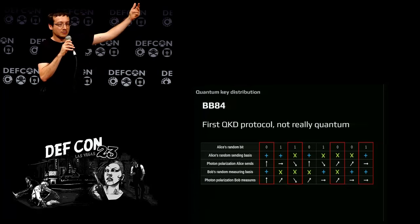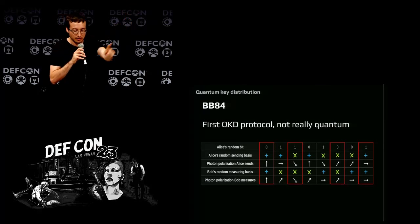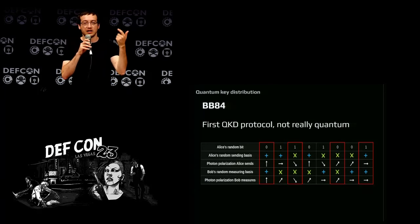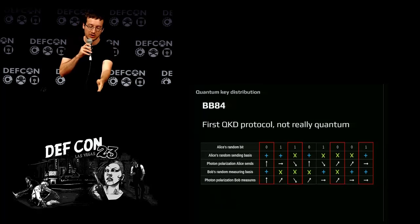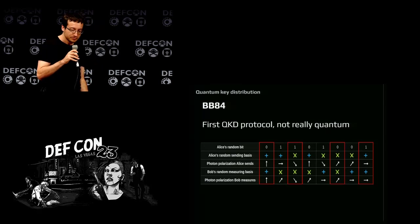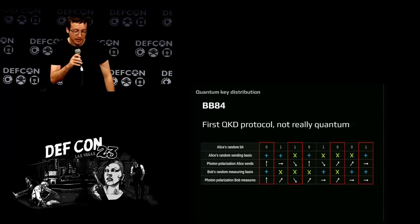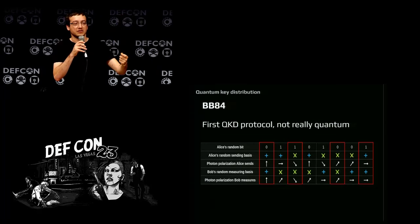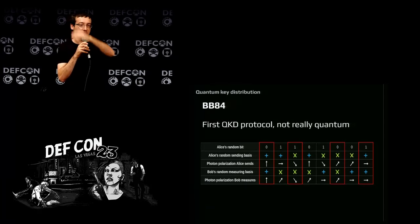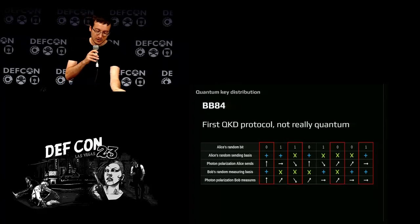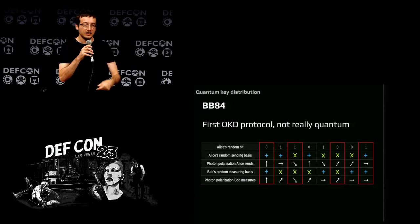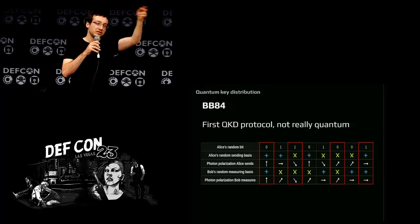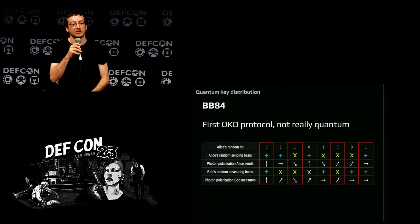In BB84, Alice selects random bits and chooses an encoding — a polarization: either the blue basis (vertical/horizontal) or the green basis (diagonal). She sends the photons to Bob. Bob doesn't know the encoding so he picks a random basis too. If they chose the same encoding, he observes the correct value; if not, he gets a random value — and it's too late to correct, because once observed the photon is no longer a quantum object. Bob then publishes which bases he used; Alice tells him which were correct, and they keep only the bits where the encodings matched.